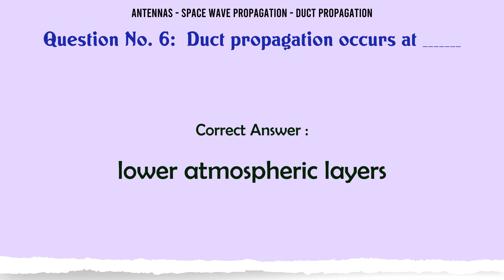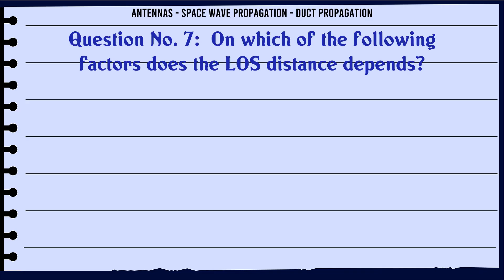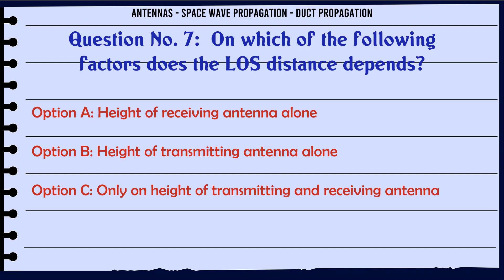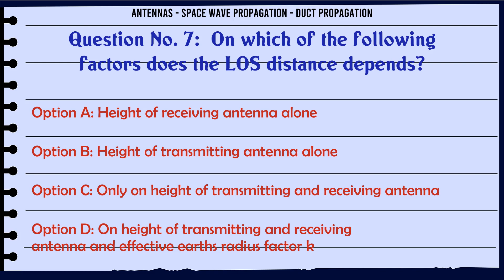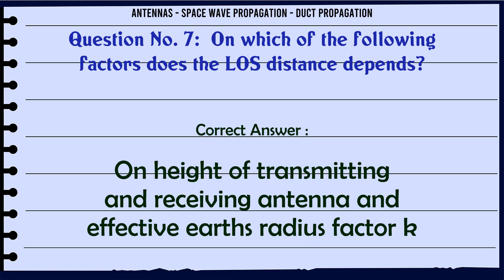On which of the following factors does the loss distance depend? A) Height of receiving antenna alone. B) Height of transmitting antenna alone. C) Only on height of transmitting and receiving antenna. D) On height of transmitting and receiving antenna and effective earth's radius factor k. The correct answer is: on height of transmitting and receiving antenna and effective earth's radius factor k.